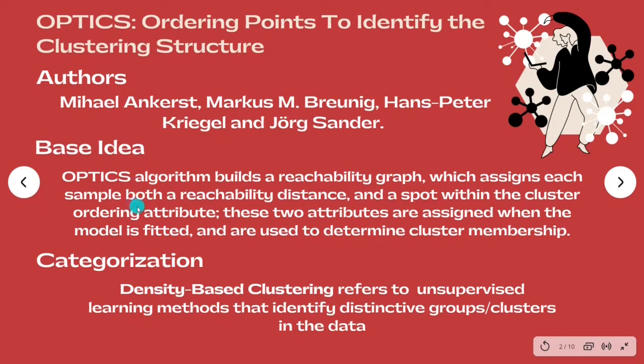The basic idea of the algorithm is to create a reachability chart. Each sample is assigned a reachability distance and a point within the cluster's ordering attributes. These two attributes are only assigned when the model is adjusted and are used to know which cluster it belongs to.